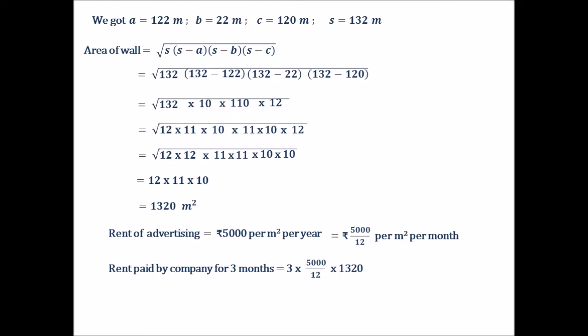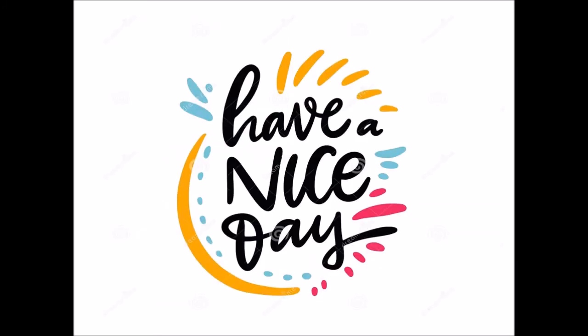12 cancels with 1320, giving 110. So the calculation becomes 3 into 5000 into 110. Multiplying: 3 into 5000 into 110 gives us Rs 16,50,000. So the total rent paid by the company for 3 months is Rs 16,50,000. Now try to solve this question on your own. Thank you and have a nice day.